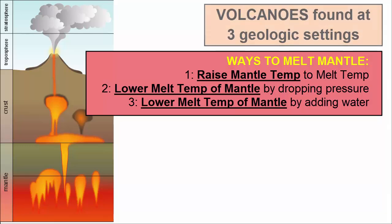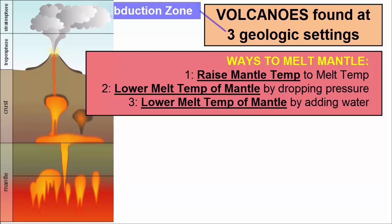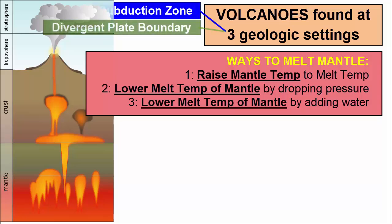Volcanoes or volcanic activity present on Earth's surface correlate with one of three different geologic settings, each of which correlates to a different method of melting the mantle: a subduction zone, a divergent plate boundary, or a hot spot. Note: the audience for this video are students of a general geology class who have already learned about plate tectonics. If your knowledge of plate tectonics is weak, please review the video tutorials on plate tectonics before continuing.